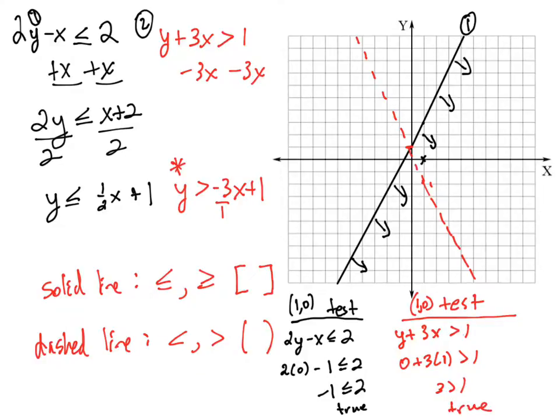So what that means is, we're going to shade in the direction of that test point, 1, 0. So 1, 0 is to the right of this red dotted line. So we're going to end up shading to the right.